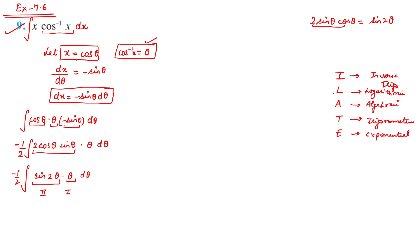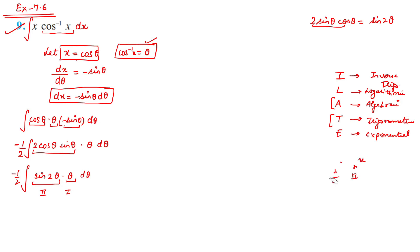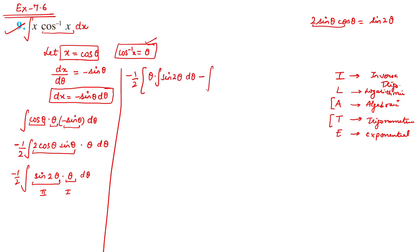Here our first function is θ and our second function is sin2θ. Applying the integration by parts formula: θ·(integration of sin2θ) minus ∫(d/dθ of θ)·(integration of sin2θ) dθ. The integration of sin2θ is −cos2θ/2. So we get −1/2 [θ·(−cos2θ/2) − ∫1·(−cos2θ/2) dθ].